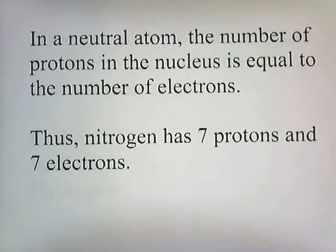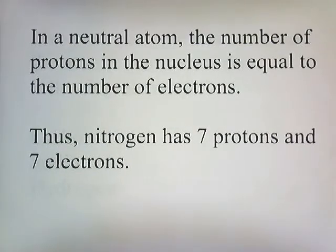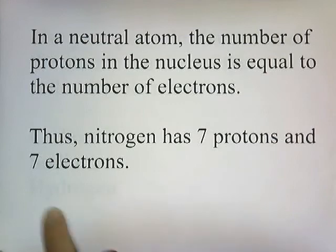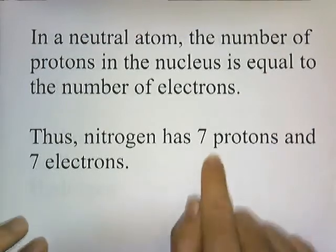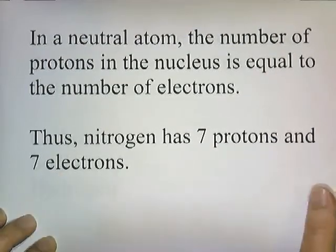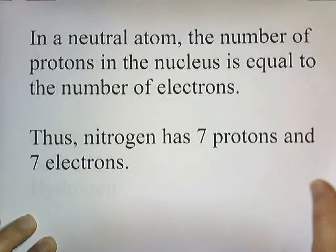In a neutral atom, the number of protons in the nucleus is equal to the number of electrons. So nitrogen has seven protons and seven electrons. The atomic number is the same as the number of electrons it has.